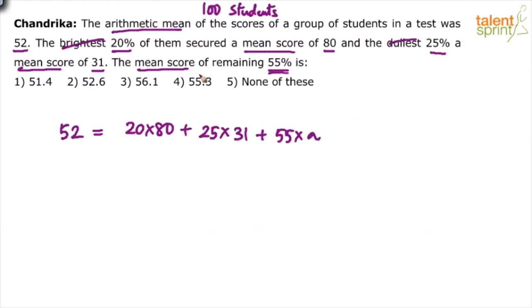That's what you have to find right, the average, the mean score. Divided by 100. 52 is the overall average for 100 students. What is average? Sum of the values by number of values. Sum of the brightest 20, sum of the dullest 25, sum of the remaining 55 divided by 100.